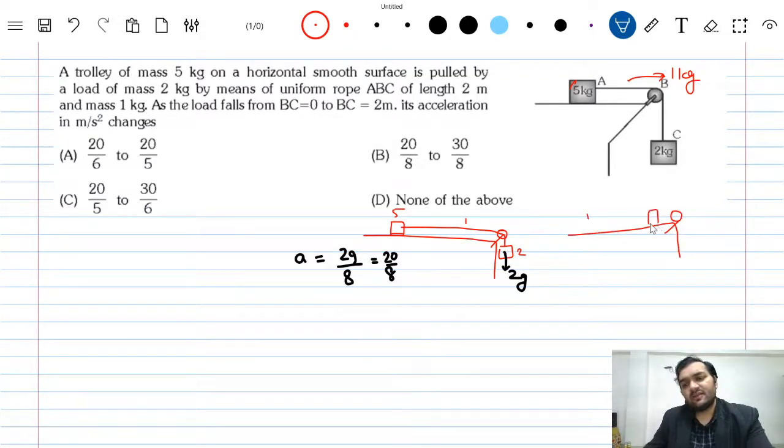So this block has come here. BC was 0 initially and BC has now become 2 meters. So this is 5 kg, and this is 1 kg and 2 kg.